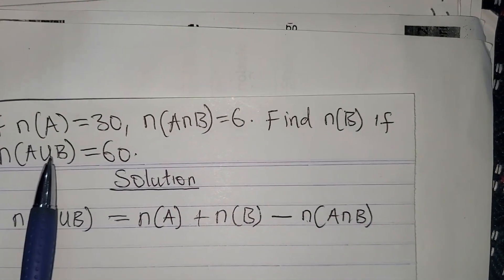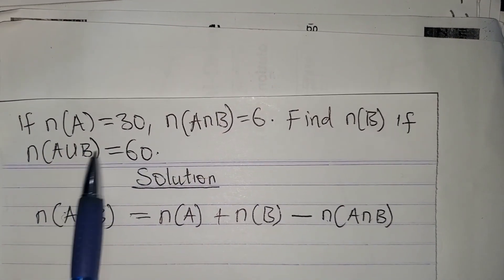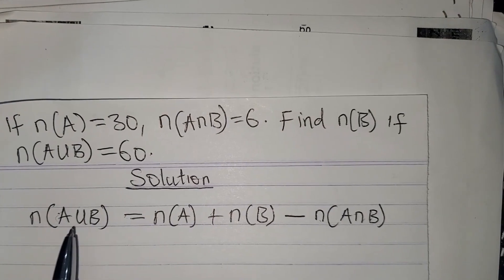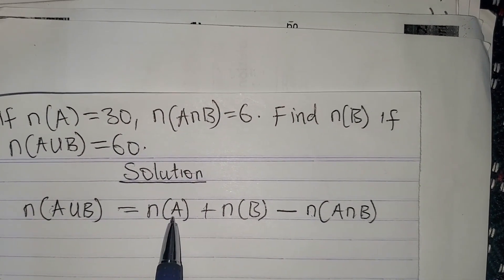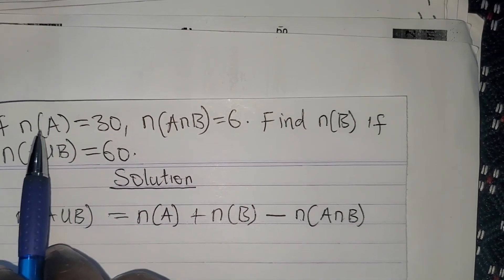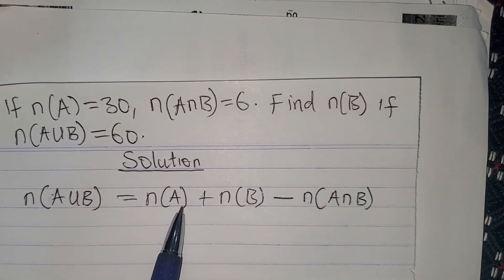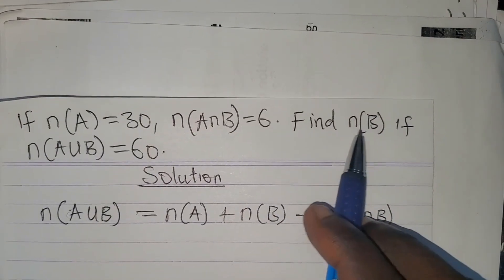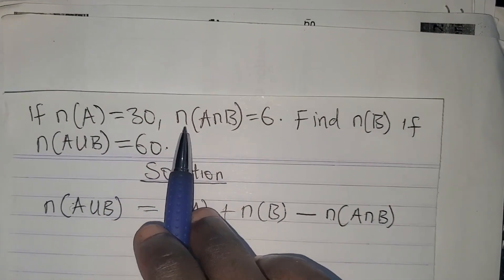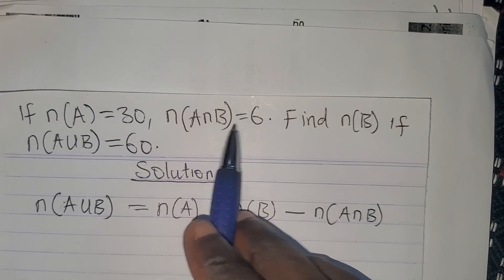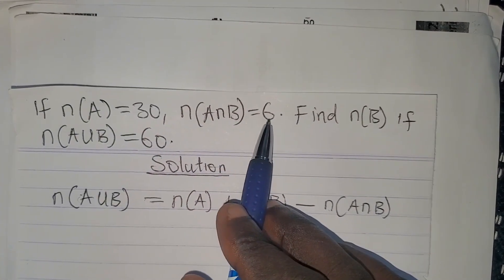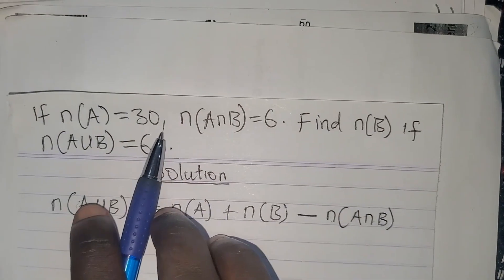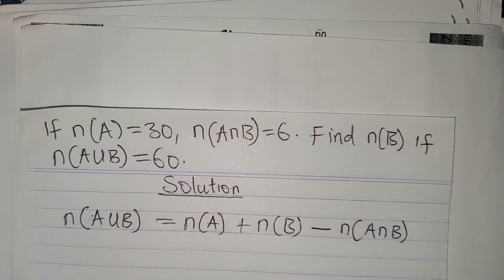We're told that the number of elements in A union B is 60. The number of elements in A is 30. The number of elements in B is what we are calculating for. The number of elements in A intersect B is 6. So let's substitute the parameters given into this formula.